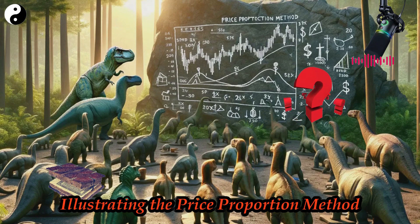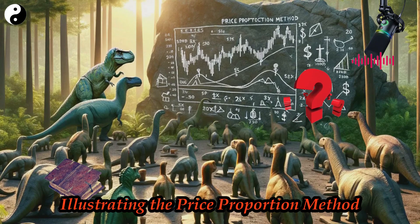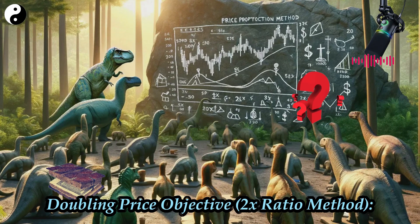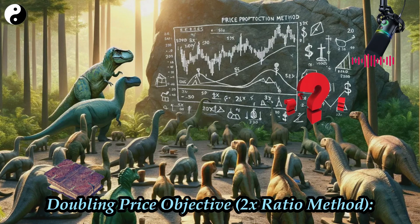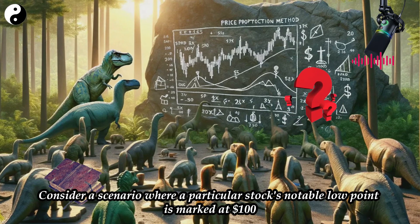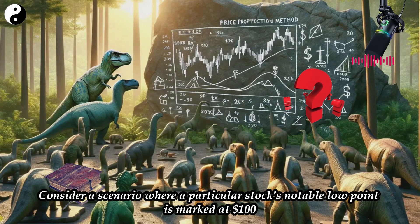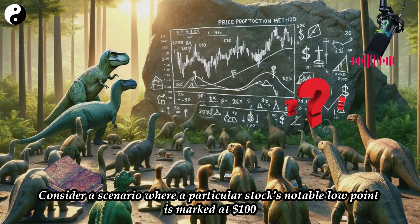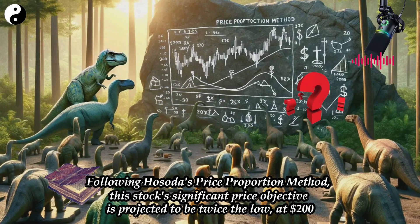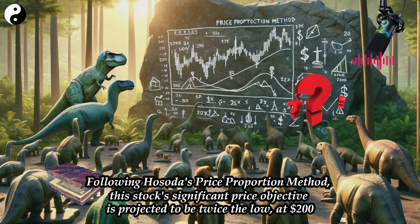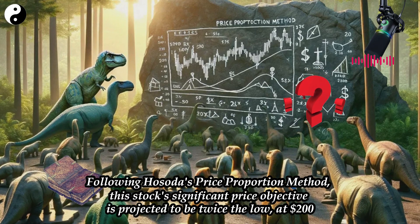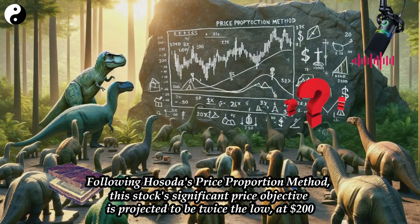Illustrating the Price Proportion Method: Doubling Price Objective — 2x Ratio Method. Consider a scenario where a particular stock's notable low point is marked at $100. Following Hisoda's price proportion method, this stock's significant price objective is projected to be twice the low, at $200.